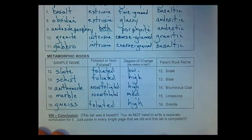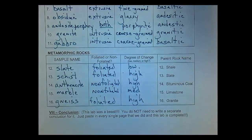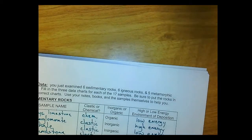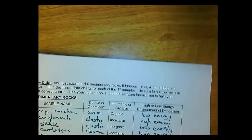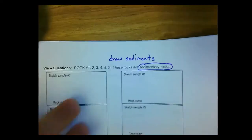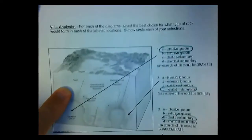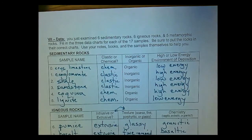There was a lot to this lab. You do not need to write a separate conclusion — just paste in all the pages. Make sure all of your samples have been drawn, colored, and sketched; the front of the lab is filled in with identifications; and that you've finished the rock formation cross sections along with the data tables at the back. Great job. Thanks for watching.